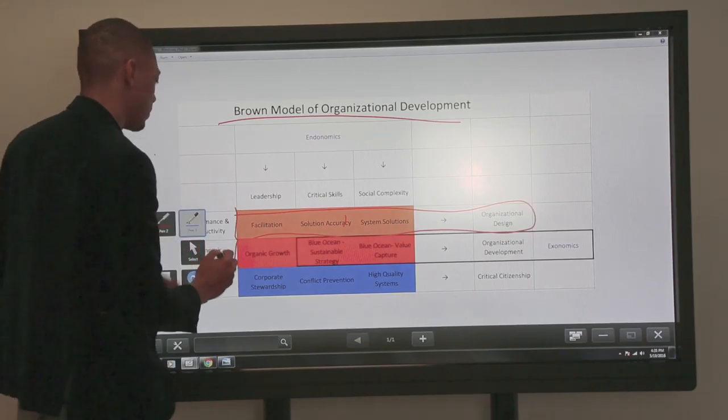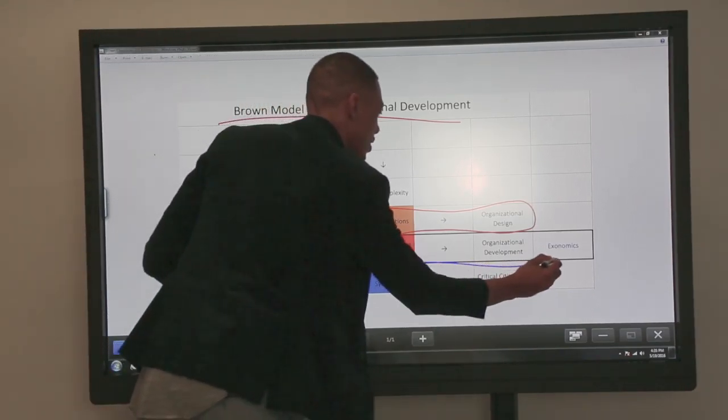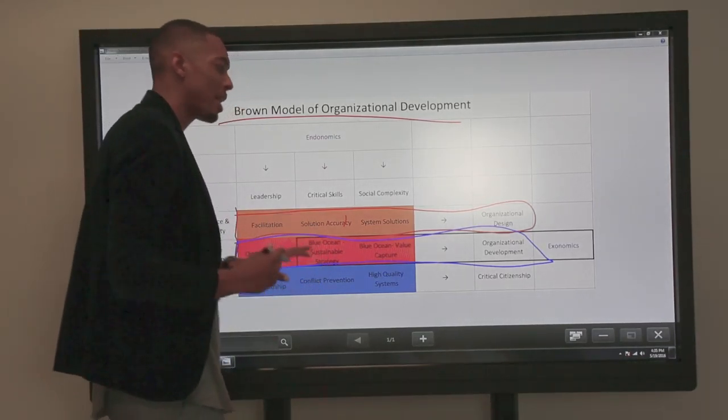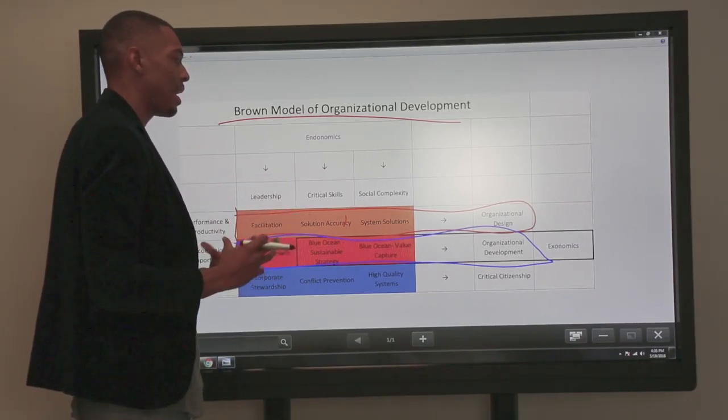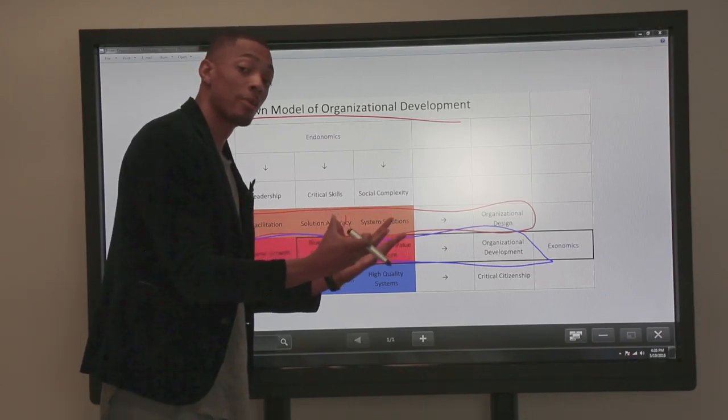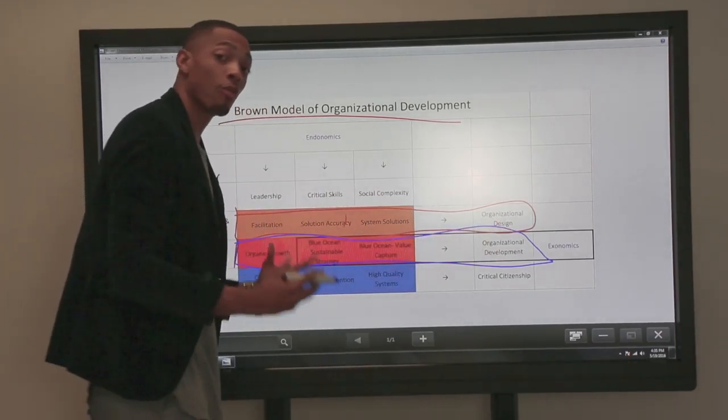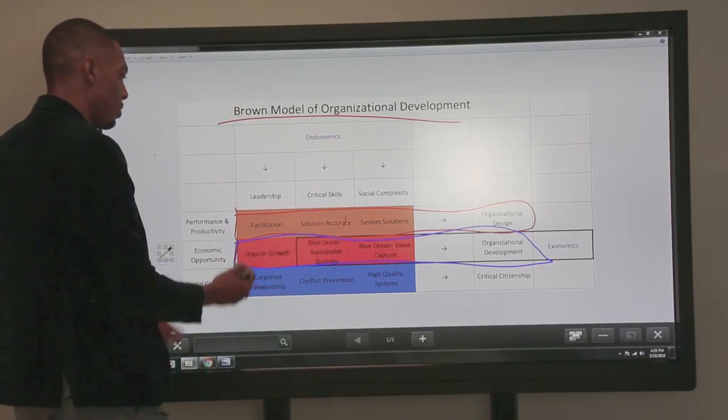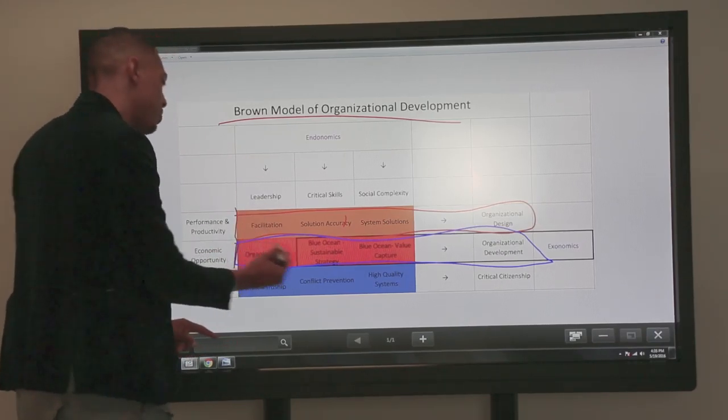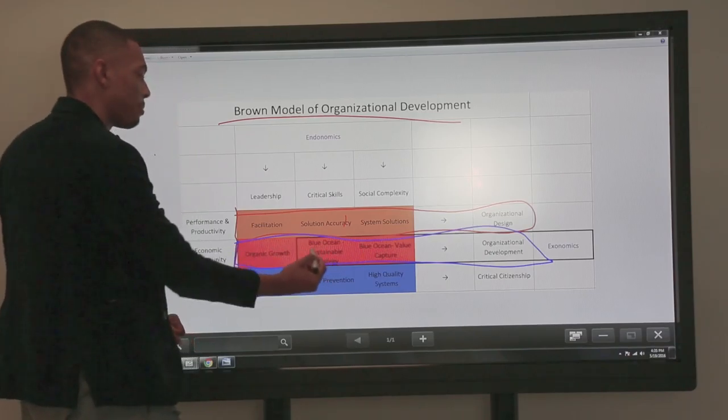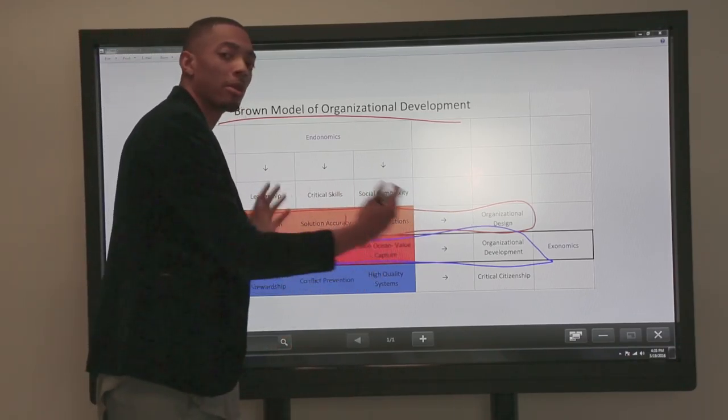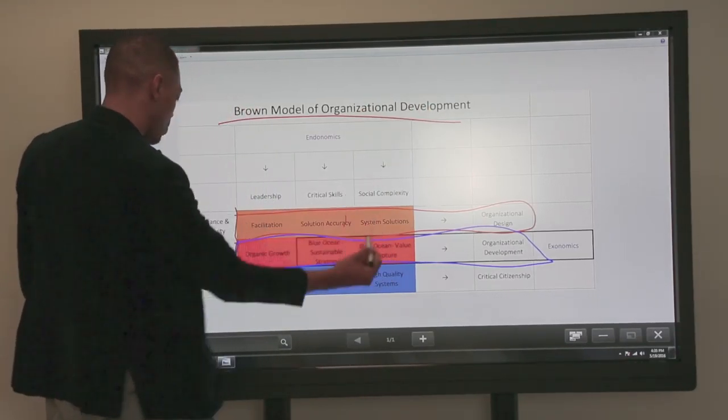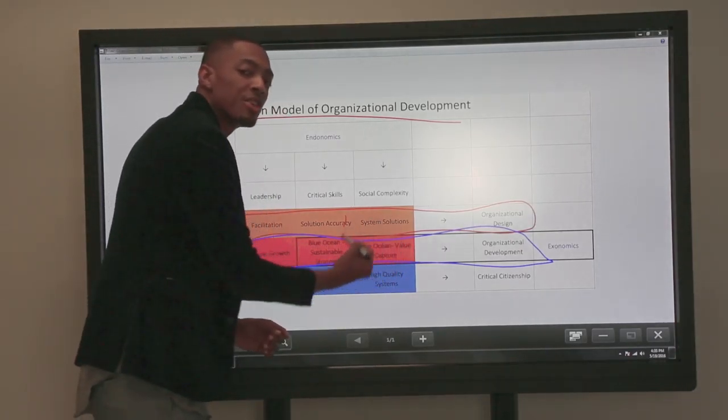The second is organizational development. We're talking about development. Whereas performance and productivity might be looking at how groups are designed and structured, organizational development looks at how they can grow, especially as it pertains to financial value. You get organic growth, which is where your leaders can help spot opportunities. Then you're looking at critical skills and economic opportunity, where you're able to build strategies that actually work in the marketplace, not just for your company, but for the betterment of a society. Then you are able to look at social complexity and economic opportunity, which is where you are leveraging the value of diversity.